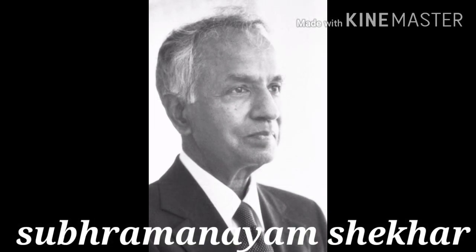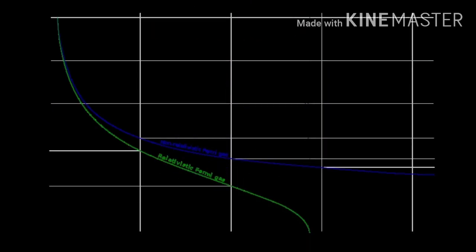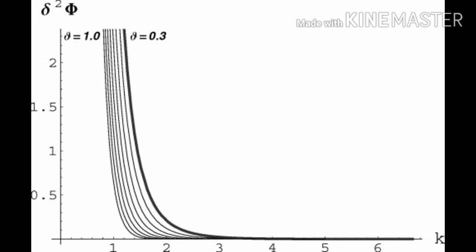Subramanyam Chandrasekhar, born 19 October 1910. He is known for the Chandrasekhar limit, Chandra X-Ray Observatory, Chandrasekhar friction, Chandrasekhar number, and the Chandrasekhar virial equation.